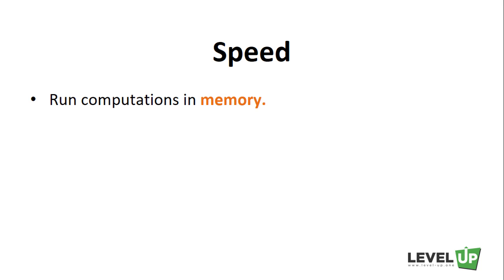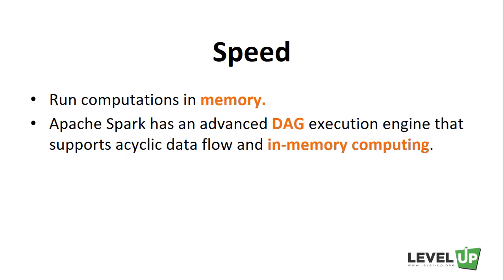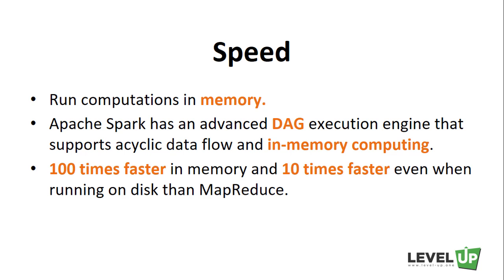Speed is a very critical aspect in processing large datasets, as it means the difference between exploring data interactively and waiting minutes or hours. One of the main advantages of Spark regarding speed is its ability to run computations in memory. Apache Spark has an advanced DAG execution engine that supports acyclic data flow and in-memory computing. Spark enables applications in Hadoop clusters to run up to 100 times faster in memory and 10 times faster even when running on disk.